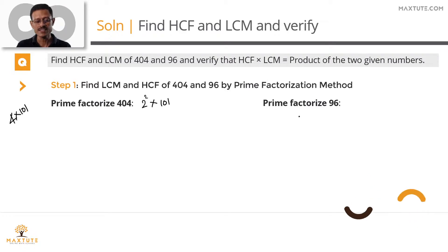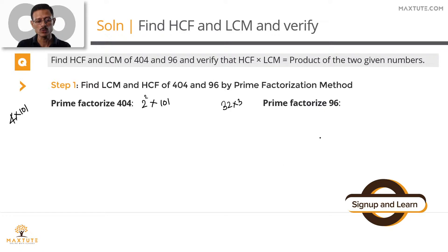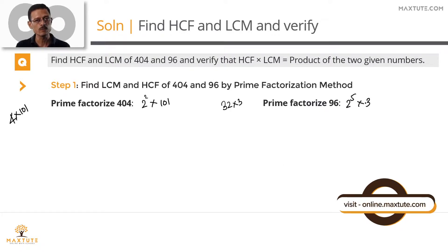96 can be written as 32 into 3. Since 32 is not prime but is a power of 2, we write it as 2⁵ into 3. So we have prime factorized both numbers: 404 = 2² × 101, and 96 = 2⁵ × 3.